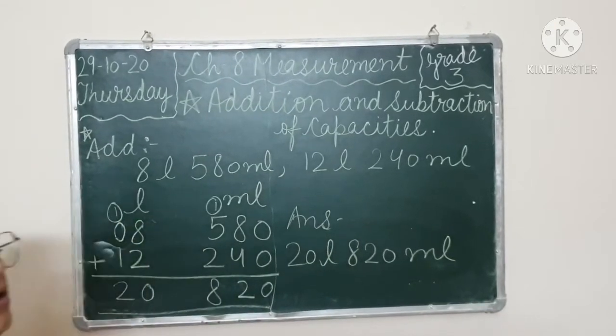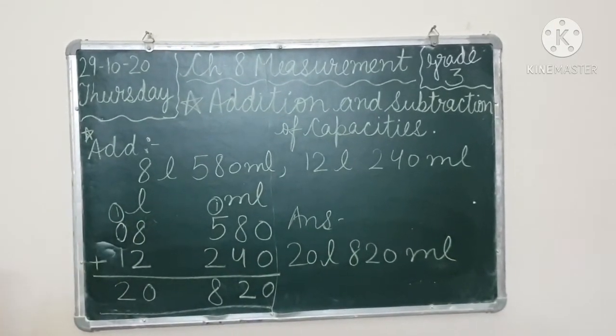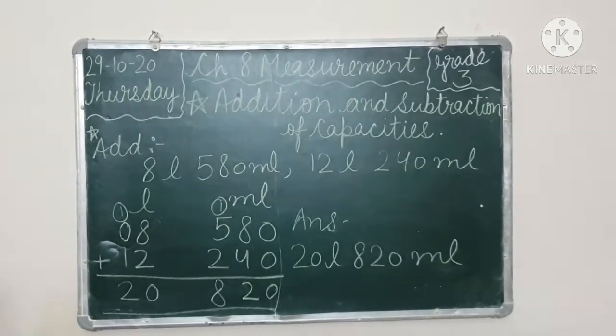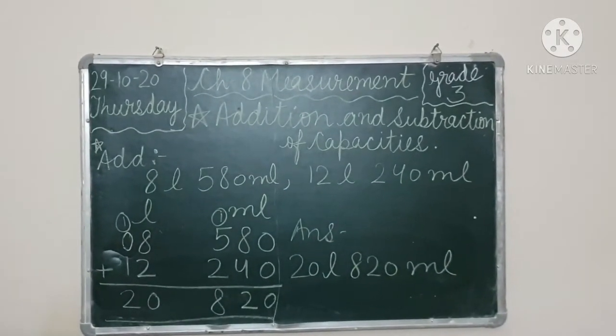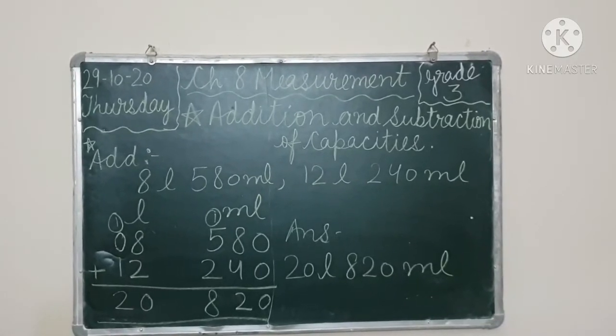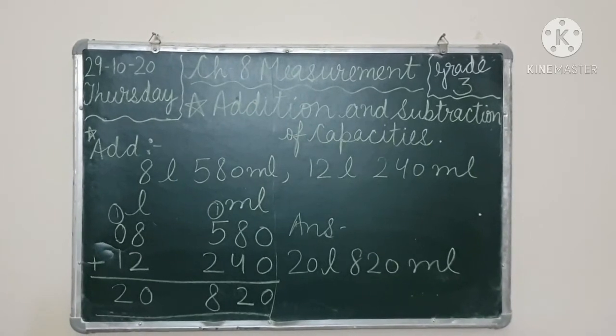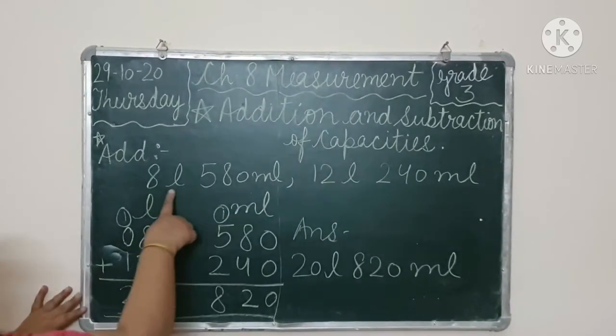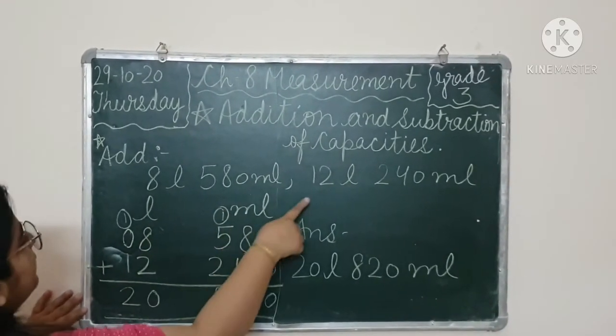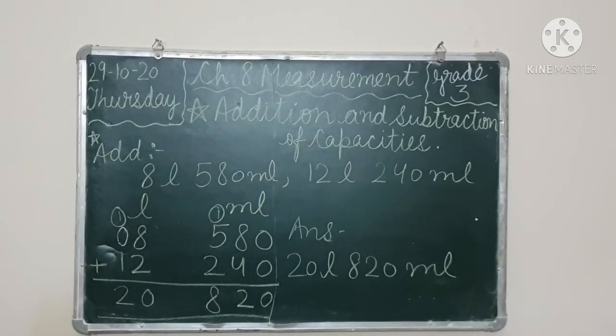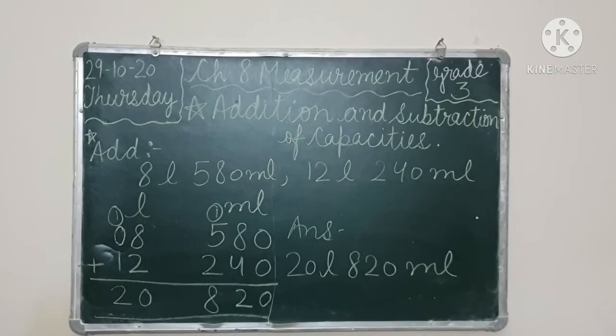Simple, right? It's not too tough. What do we have to do? We have to make liter and milliliter columns, write liter values in liter column, milliliter in milliliter. Then we add. And in addition, we can write values top or bottom. If we want to write this value first, we can write it first. If we want to write this one first, we can. But in addition we can write values top or bottom. Clear?